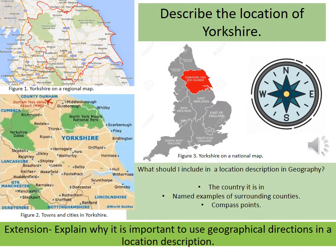Describe the location of Yorkshire. There are three different figures on the screen: Figure one shows Yorkshire on a regional map, Figure two shows towns and cities in Yorkshire, and Figure three shows Yorkshire on a national map. What should I include in a location description in geography? The country it's in, named examples of surrounding counties and compass points. Extension: explain why it is important to use geographical directions in a location description.